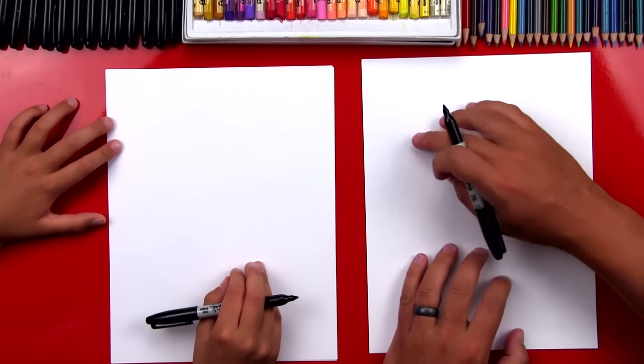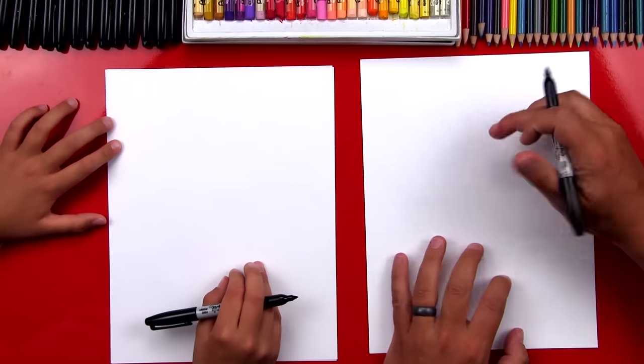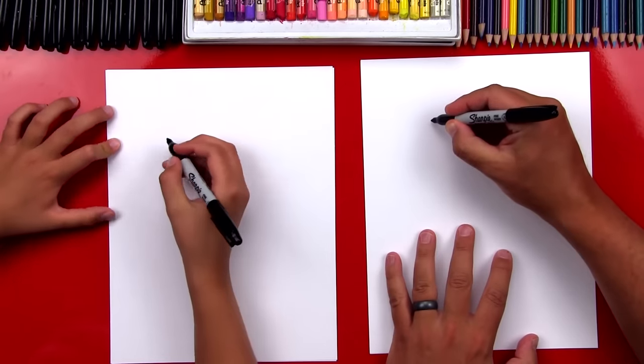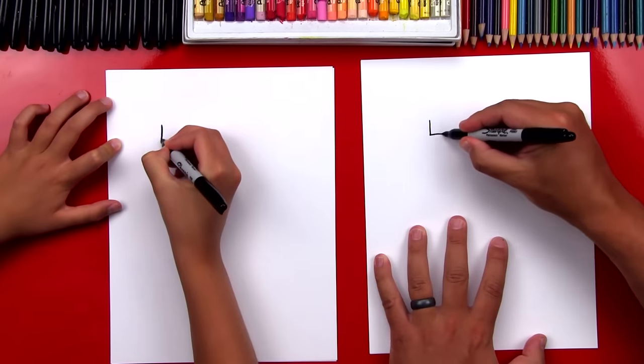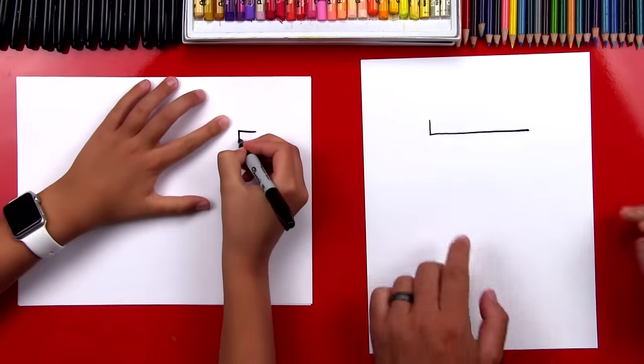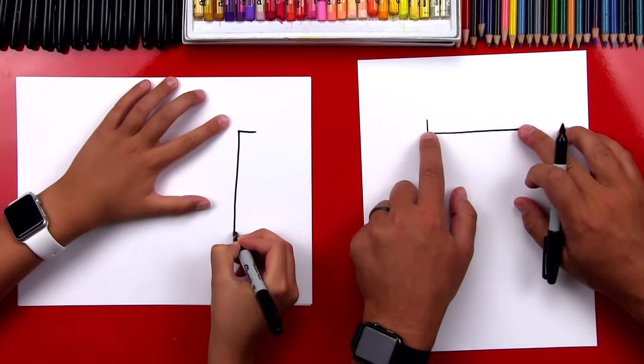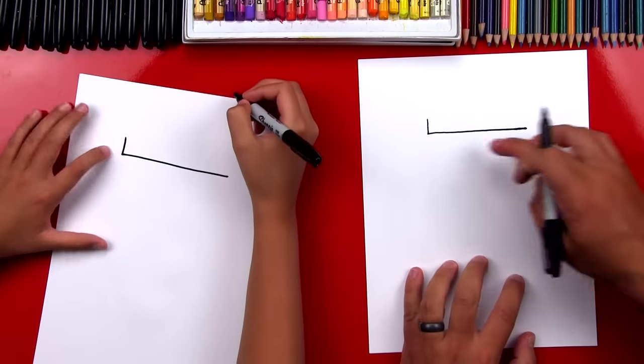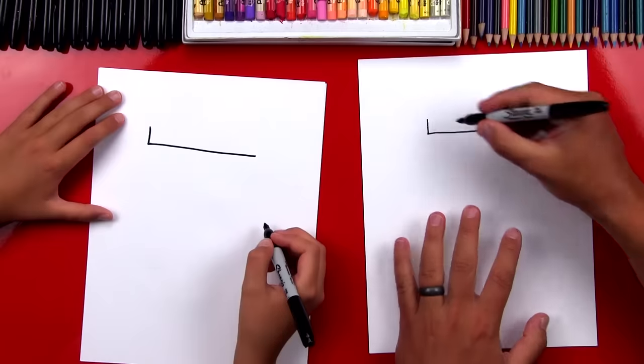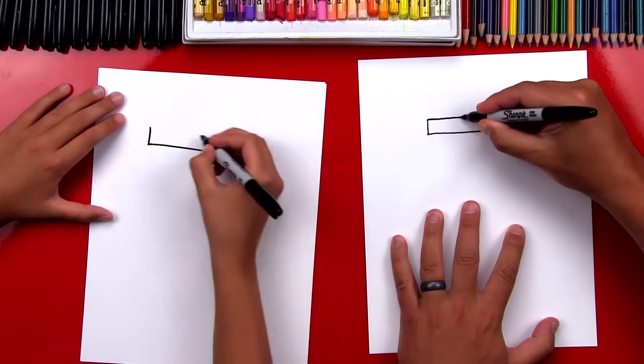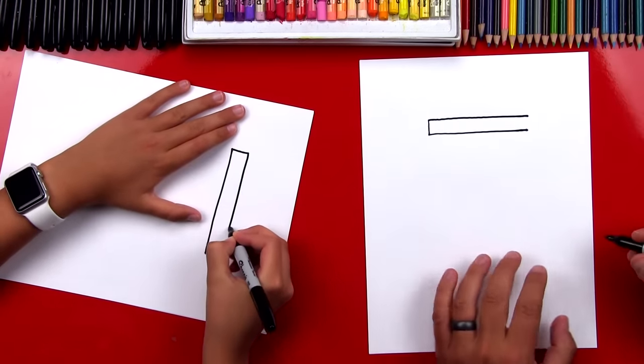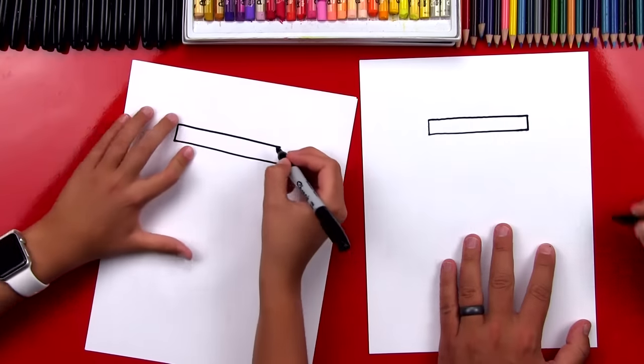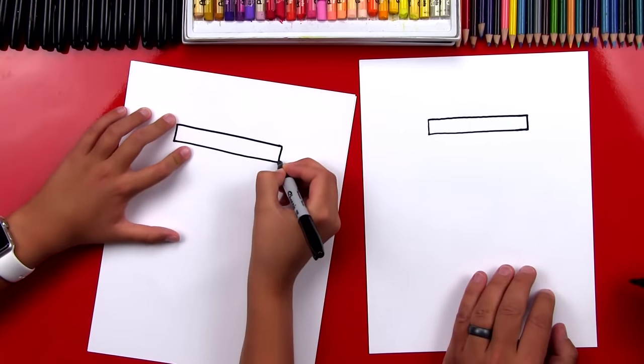We're gonna start by drawing a rectangle, a long rectangle at the top of our paper. Draw a short line down and then a long line across. We're drawing an L shape and this line is in the middle of our paper, see how we got equal space on each side. Now let's draw the top of our rectangle. Draw another line that matches the bottom one and then connect it over here on the right.